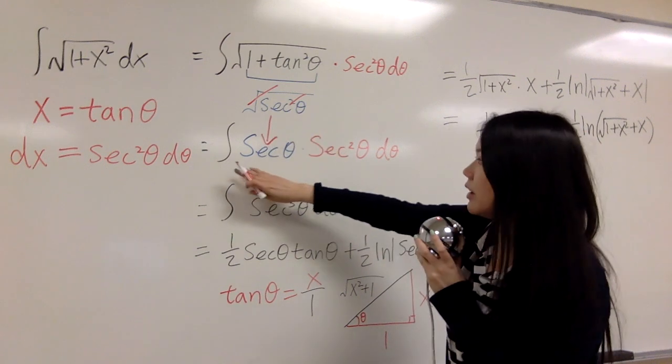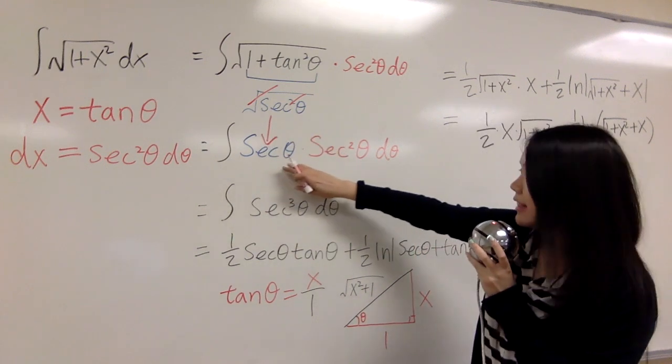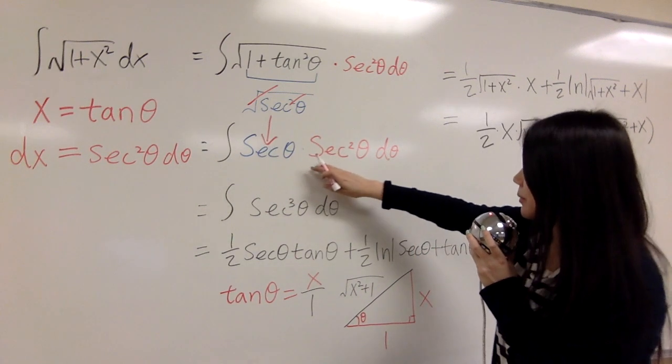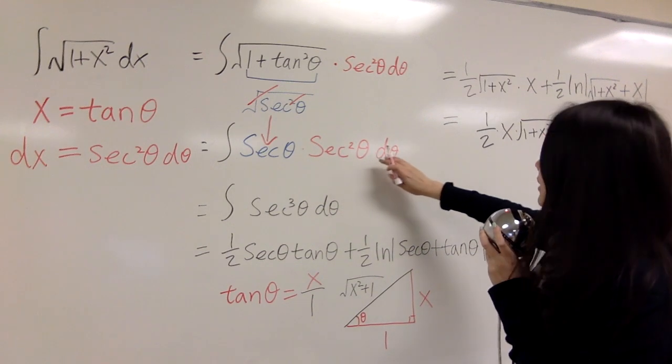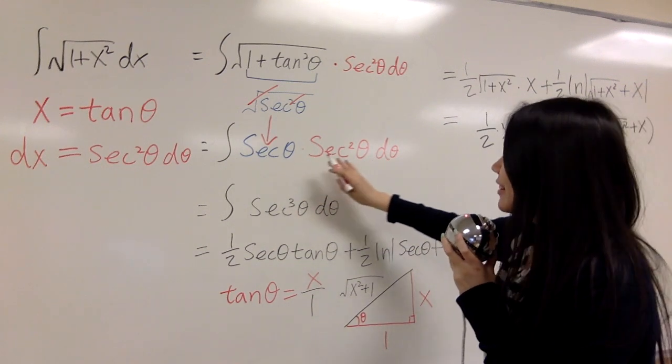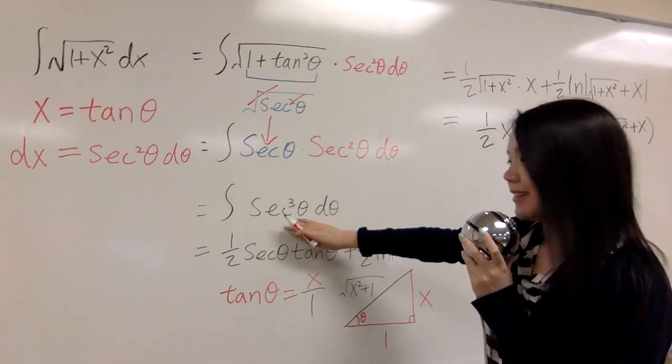So now it's integral secant theta times secant squared theta d theta. And that's the same as secant cubed.